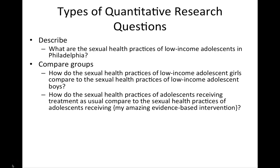Another type of research question is one in which we want to compare — typically comparing groups. For example, how do the sexual health practices of low-income adolescent girls compare to those of low-income adolescent boys? Or how do the sexual health practices of adolescents receiving treatment as usual compare to those receiving an evidence-based intervention? So they may be naturally occurring groups like gender, or groups that we have manipulated like experimental condition, but in these kinds of questions we're comparing two or more groups.